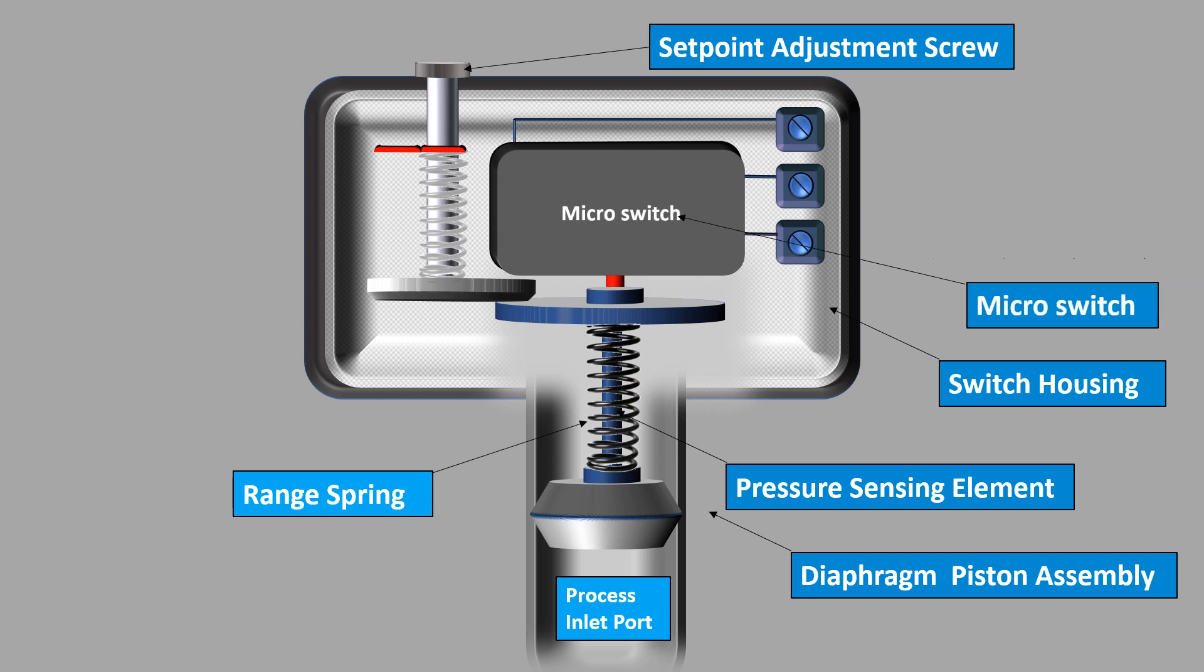Micro switch: The micro switch is used to make or break an electrical circuit when the pressure switch operates. We have already discussed about the working of micro switch in our previous video. Link of that video is there in the description.